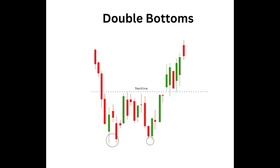Double bottom occurs when two consecutive rounding bottoms appear. Double bottoms signal a bullish reversal pattern. The first rounding bottom is formed after a strong downtrend and then the price retraces to the neckline. The second rounding bottom appears when the price falls again from the neckline. The second bottom is lower than the first bottom, which indicates that the selling pressure is not strong enough and is about to end. The price will then start an uptrend and break out at the resistance level.